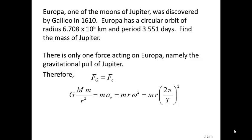We get GMm/r² = ma, and a equals rω² for centripetal acceleration, or mr(2π/T)².